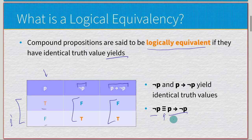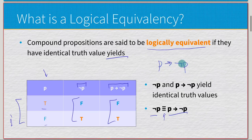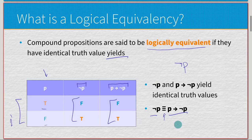One thing you might notice is we can use this as a form of simplification. If we have the expression p implies negated p, we know that we can just omit the 'p implies' part because negated p by itself is equivalent to p implies negated p. So this would be a form of simplification based on logical equivalency.